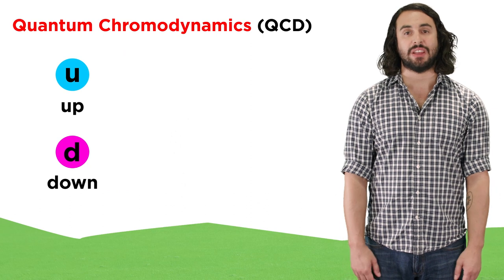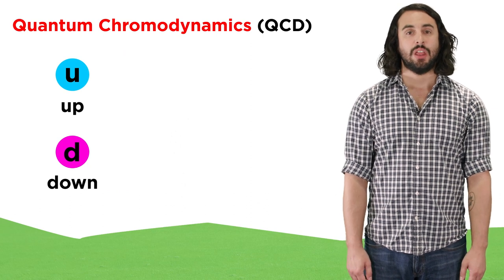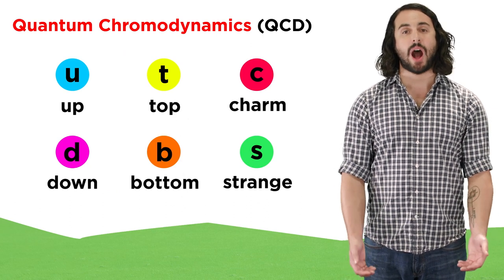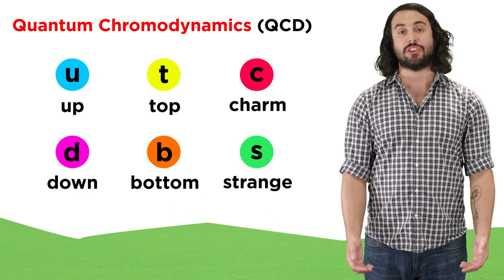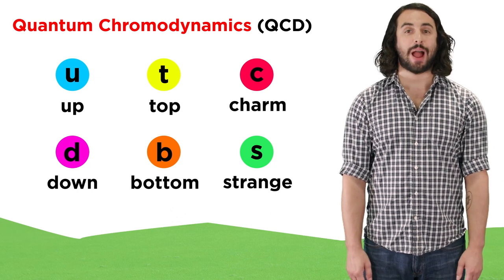There are other types of quarks beyond the up and down quark. There are also top, bottom, charm, and strange quarks, which have different properties.